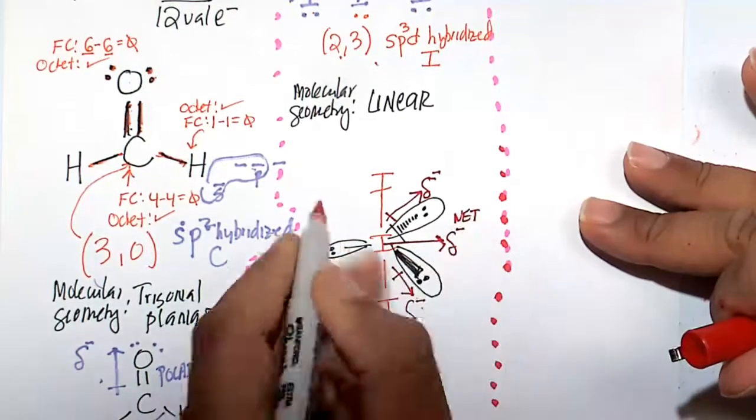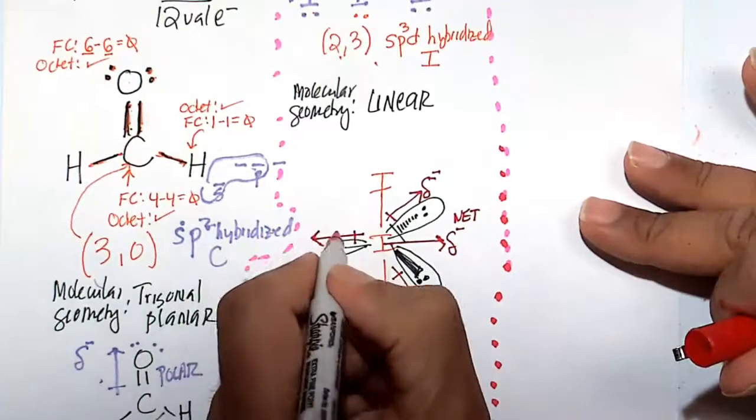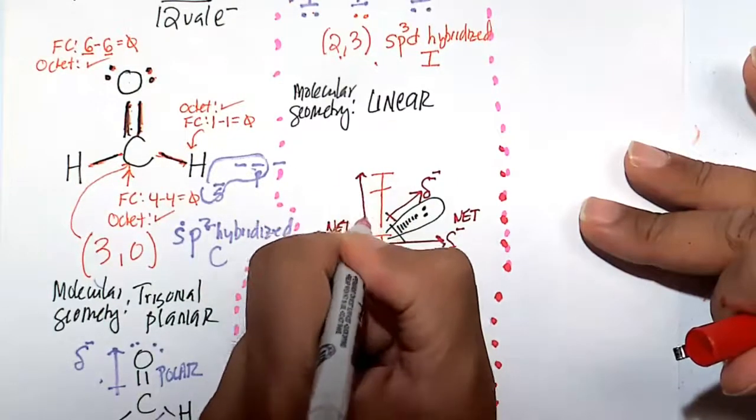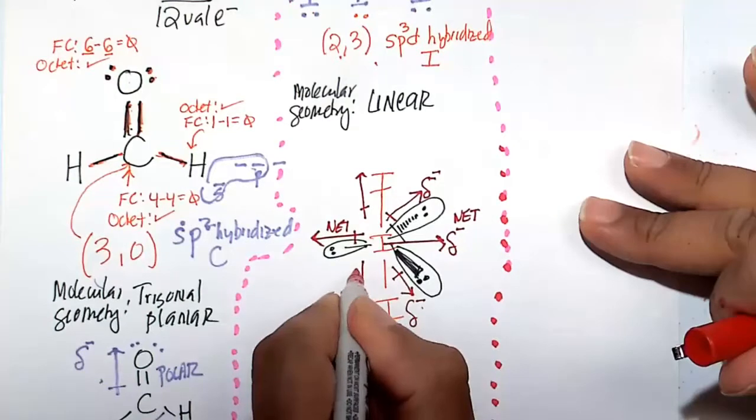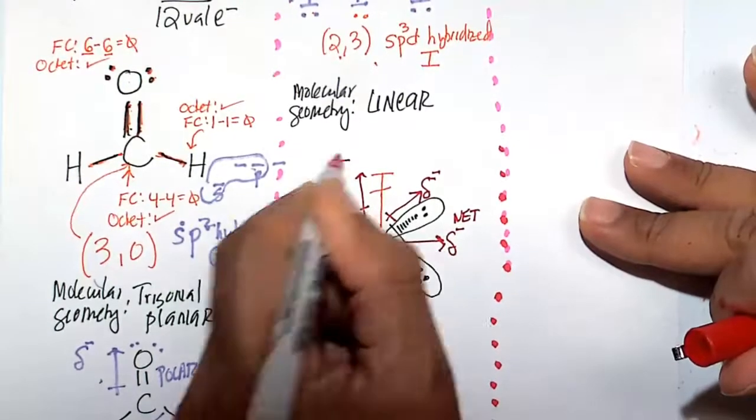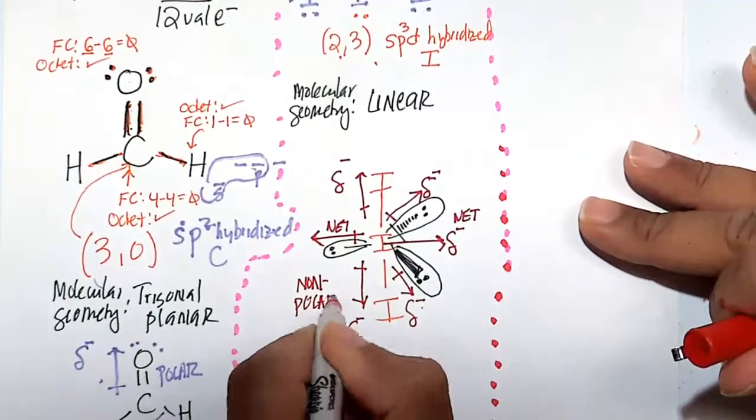That's pulling straight to the right. That's counterbalanced by this pair of electron straight on pointing to the left. So they cancel one another. And obviously this I with its own pole electronegativity is going to cancel that I with its own pole of electronegativity. So this is a nonpolar molecule.